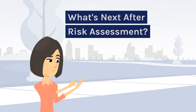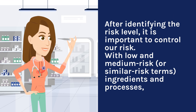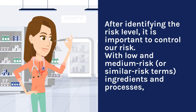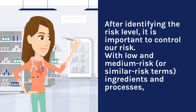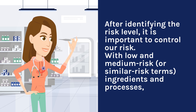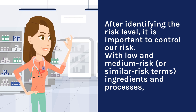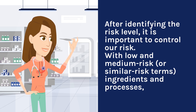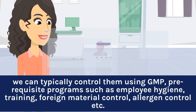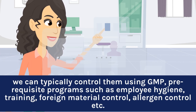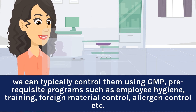After identifying the risk level, it is important to control our risk. For low and medium risk ingredients and processes, we can typically control them using GMP prerequisite programs such as employee hygiene, training, foreign material control, allergen control, and others.